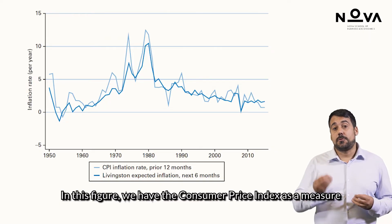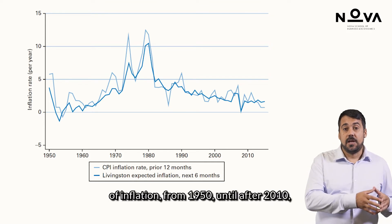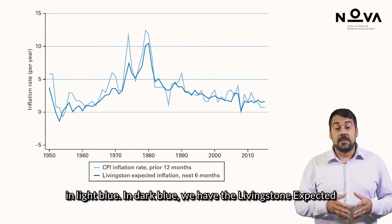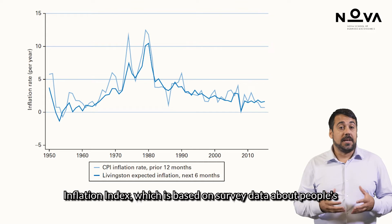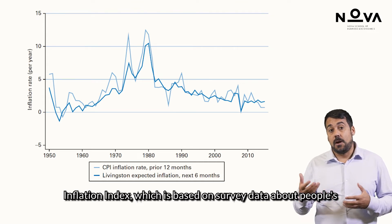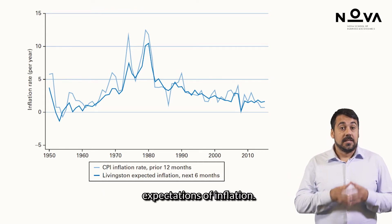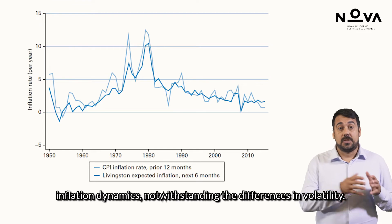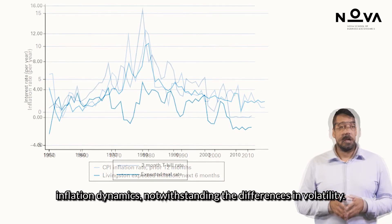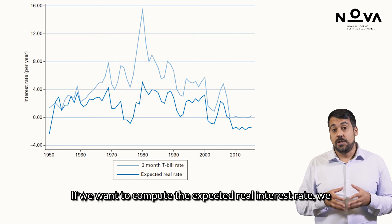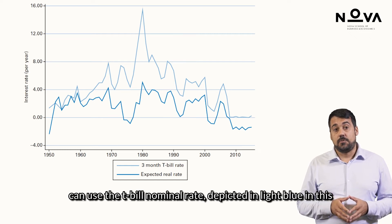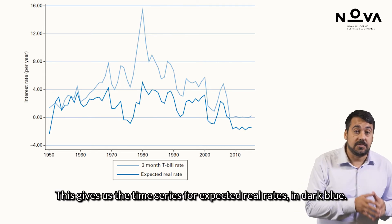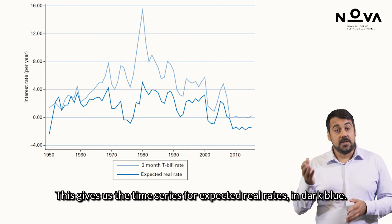In this figure we have the consumer price index as a measure of inflation from 1950 until after 2010 in light blue. In dark blue we have the Livingston expected inflation index, which is based on survey data about people's expectations of inflation. This suggests that expectation surveys do a good job at capturing inflation dynamics, notwithstanding the differences in volatility. If you want to compute the expected real interest rate, we can use the T-bill nominal rate depicted in light blue in this figure and subtract inflation expectations, giving us the time series for expected real rates in dark blue.